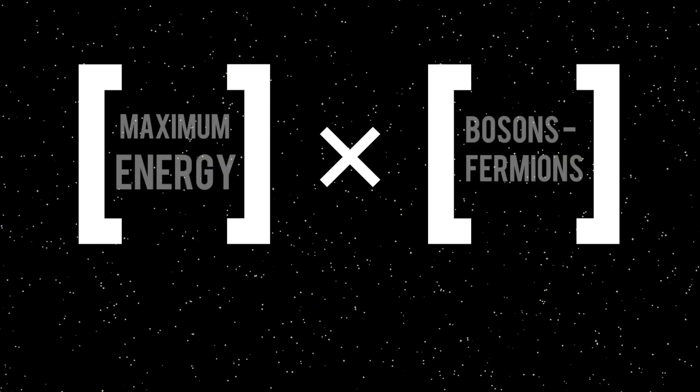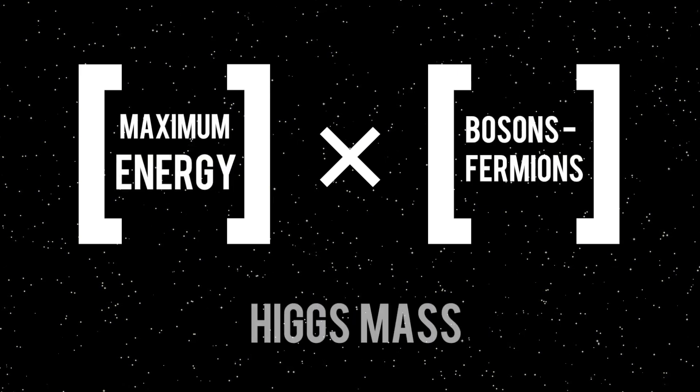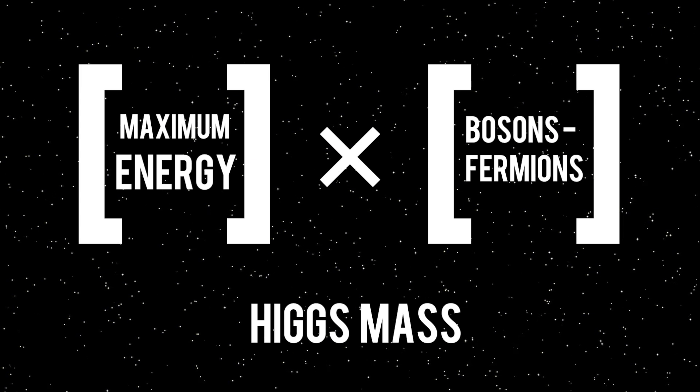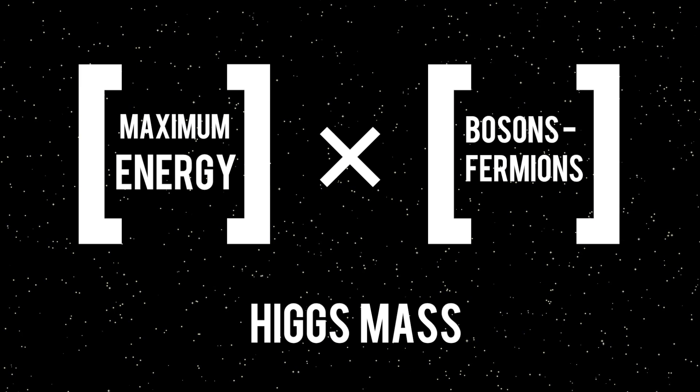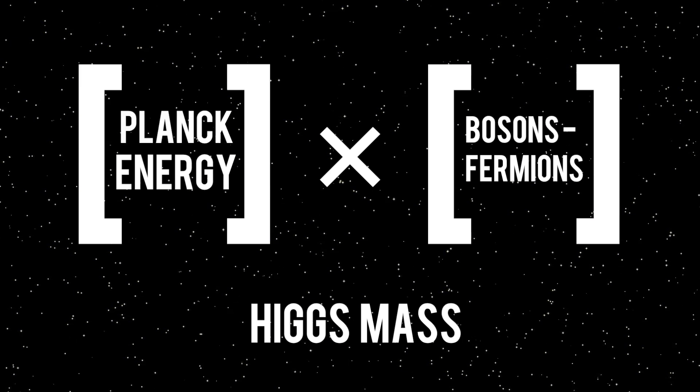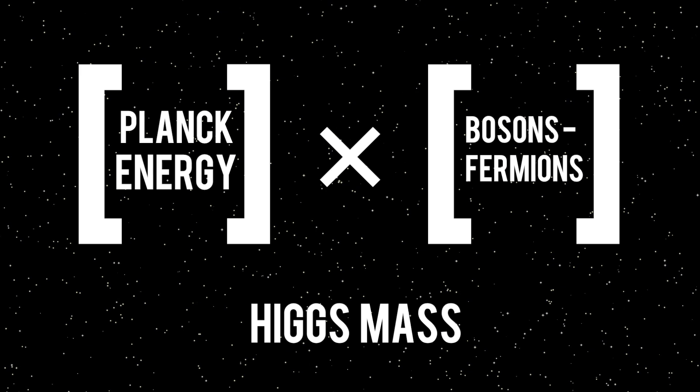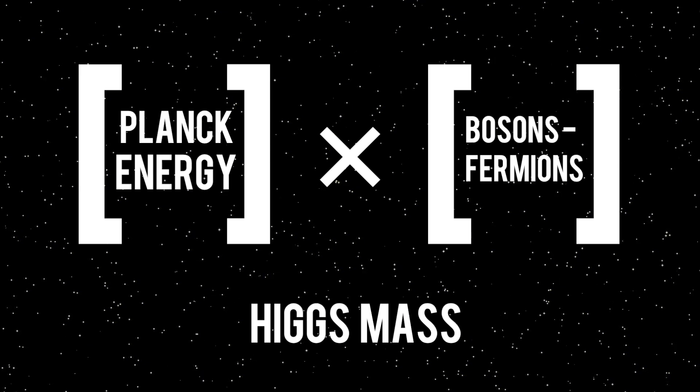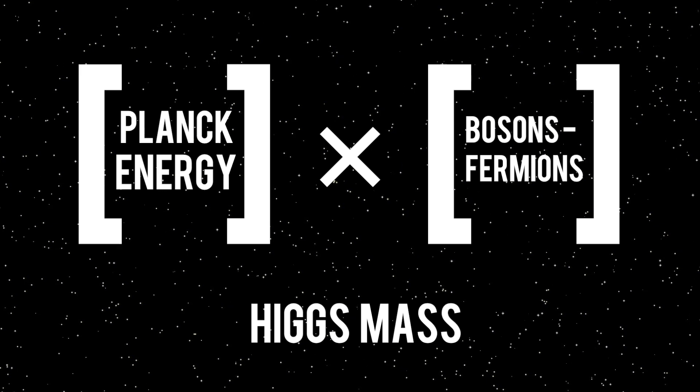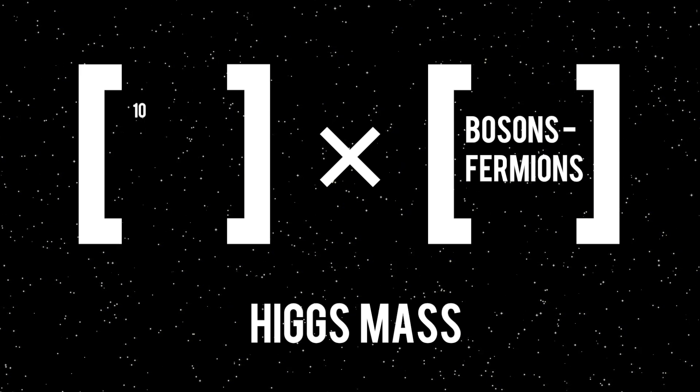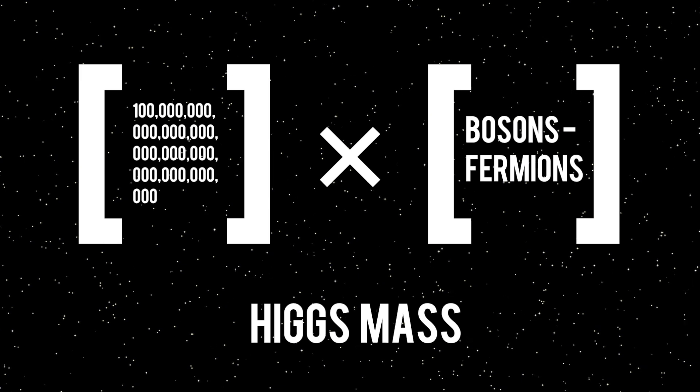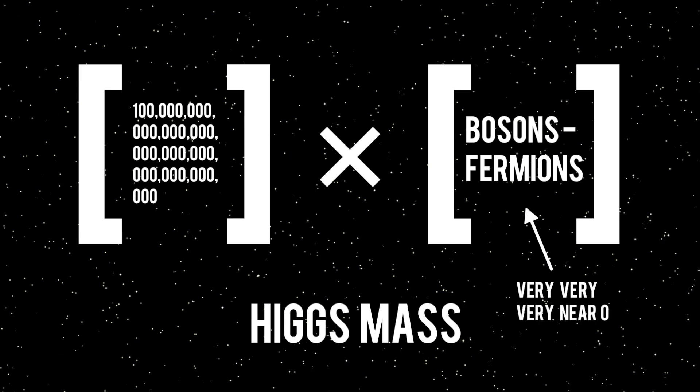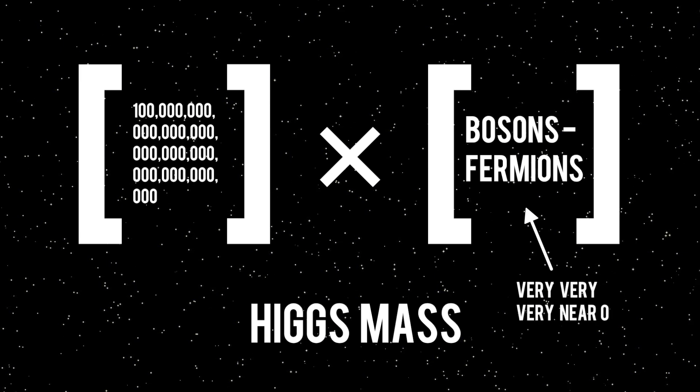So what are the numbers involved in these quantum additions to the Higgs mass? Well, the first number is related to the maximum energy for which the Higgs theory is expected to apply. This energy is the Planck energy, which is a quadrillion or so times higher than the LHC energy. Because of that complicated equation that I alluded to earlier, this makes the first number 10 to the 38, which is a one followed by thirty-eight zeros. This means that the other number has to be very, very, very near zero. It doesn't have to be exactly zero, but it must be extremely close.